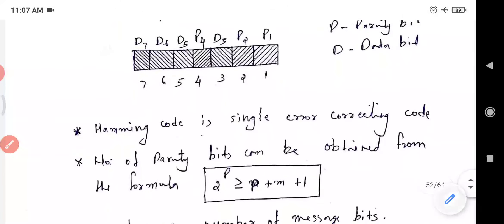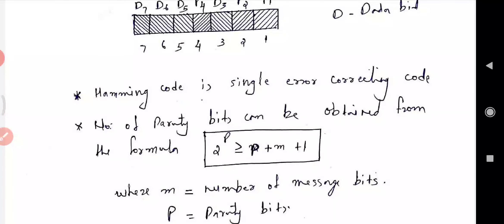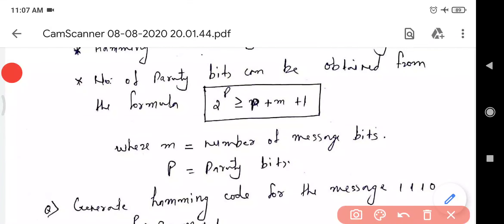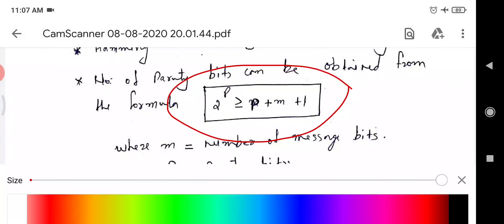The Hamming code is a single error correcting code. The number of parity bits can be obtained from the formula: 2 raised to p, greater than or equal to p plus m plus 1, where m is the message bit and p is the parity.